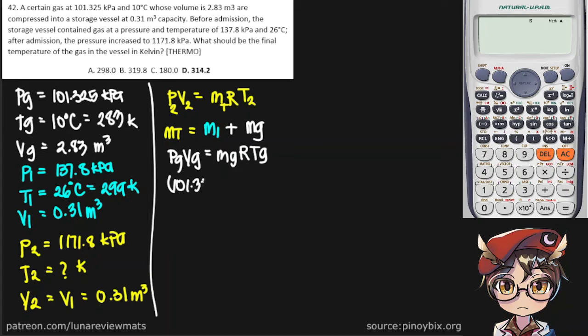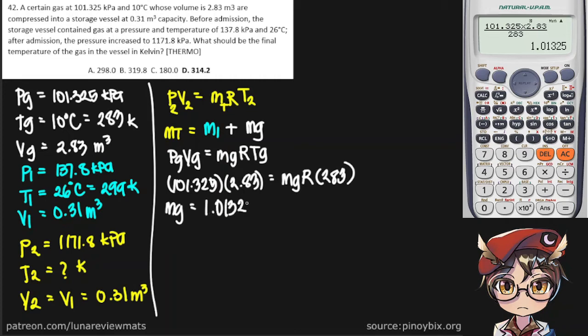Simply put our values in. These are already in the correct units. Leave R as it is for now. We should get our mass of the gas. And we get a value of 1.01325 per gas constant. You must remember to include this.